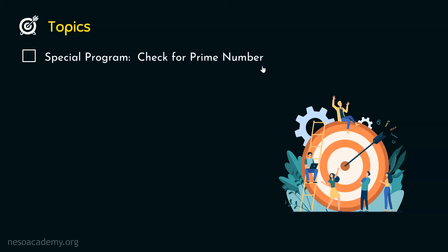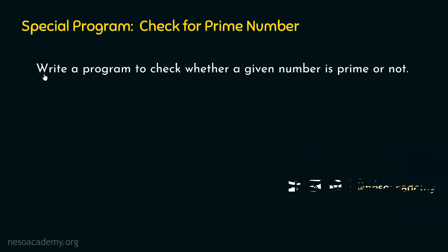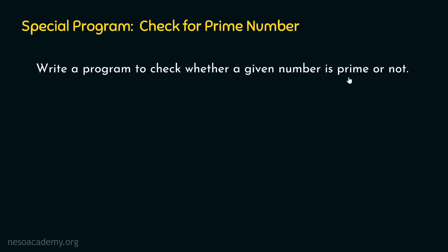We are now interested in writing the program to check for a prime number. We first need to understand the problem statement properly, and then we will write the program. The problem statement is: write a program to check whether a given number entered by the user is prime or not. Now, what is the meaning of a prime number? Let's understand this before writing the program.